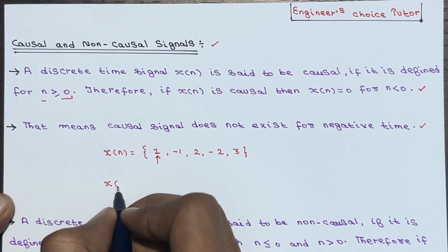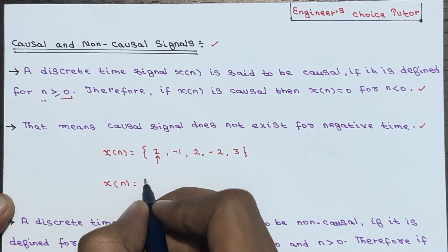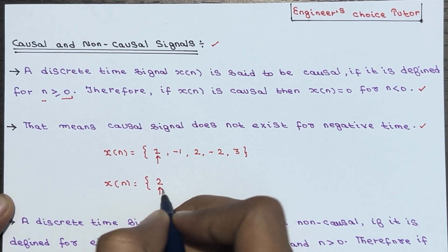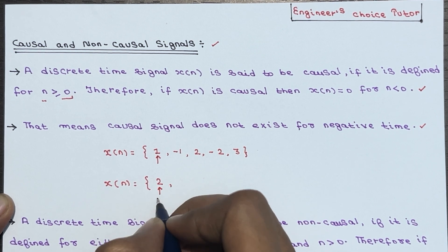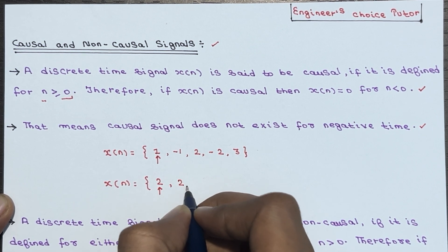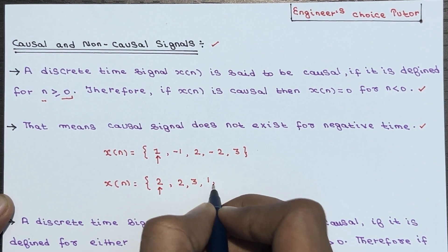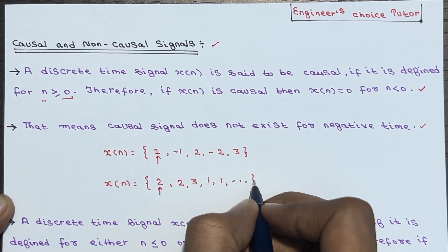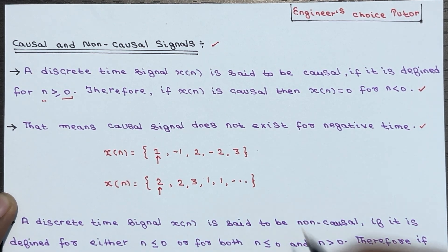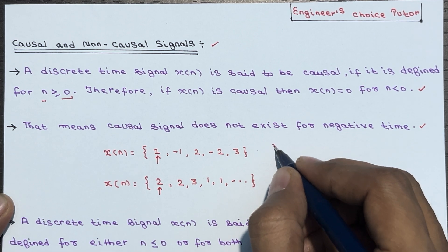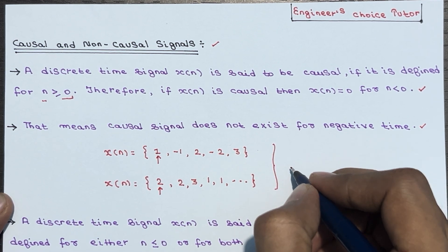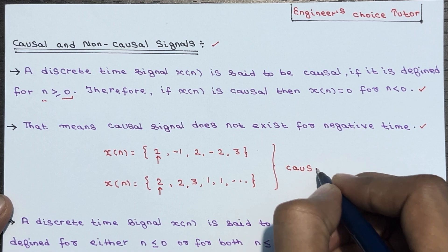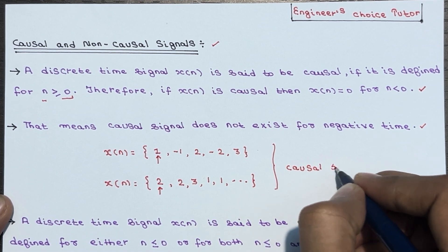Another signal x of n is equal to 2 at n equal to 0, then 2, 3, 1, 1, and so on. Both these signals are causal signals.